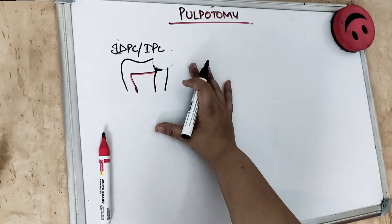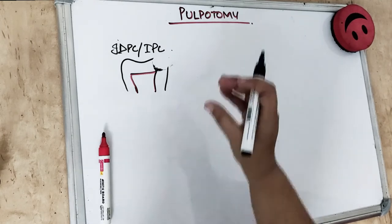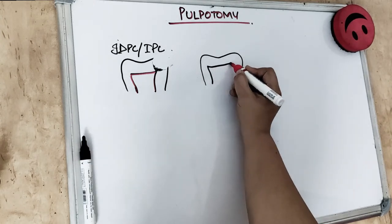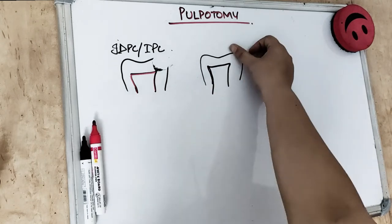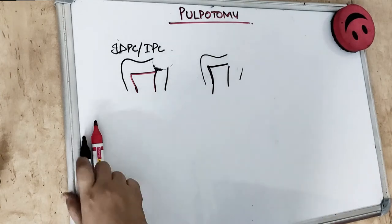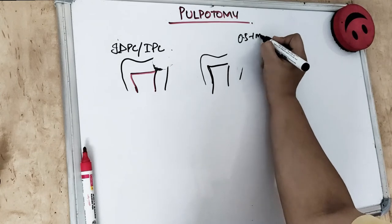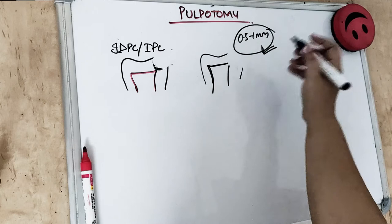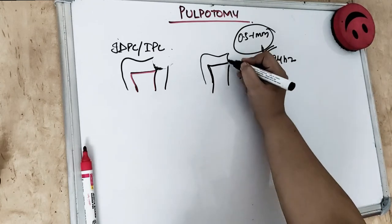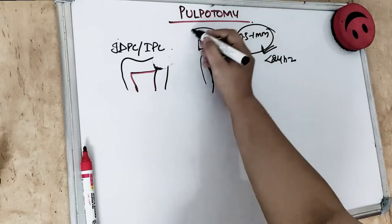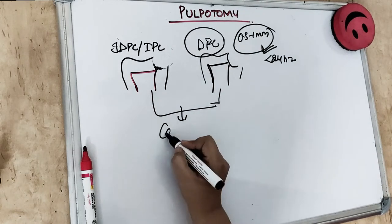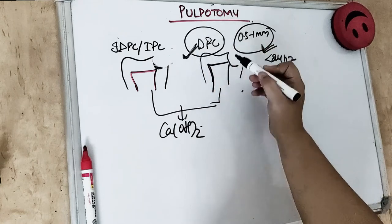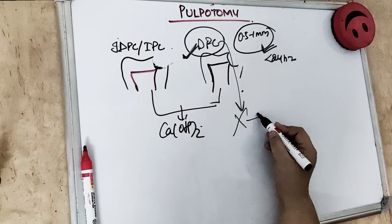In primary teeth the pulps are huge, enamel is less, and dentine is also little. So while preparing the cavity, we may accidentally come close to the pulp and cause a pinpoint exposure of 0.5 to 1 millimeter. This is a mechanical exposure — not a carious exposure — or it could be a traumatic exposure which is less than 24 hours. In that scenario we perform direct pulp capping, using calcium hydroxide. However, direct pulp capping is actually contraindicated for primary teeth.